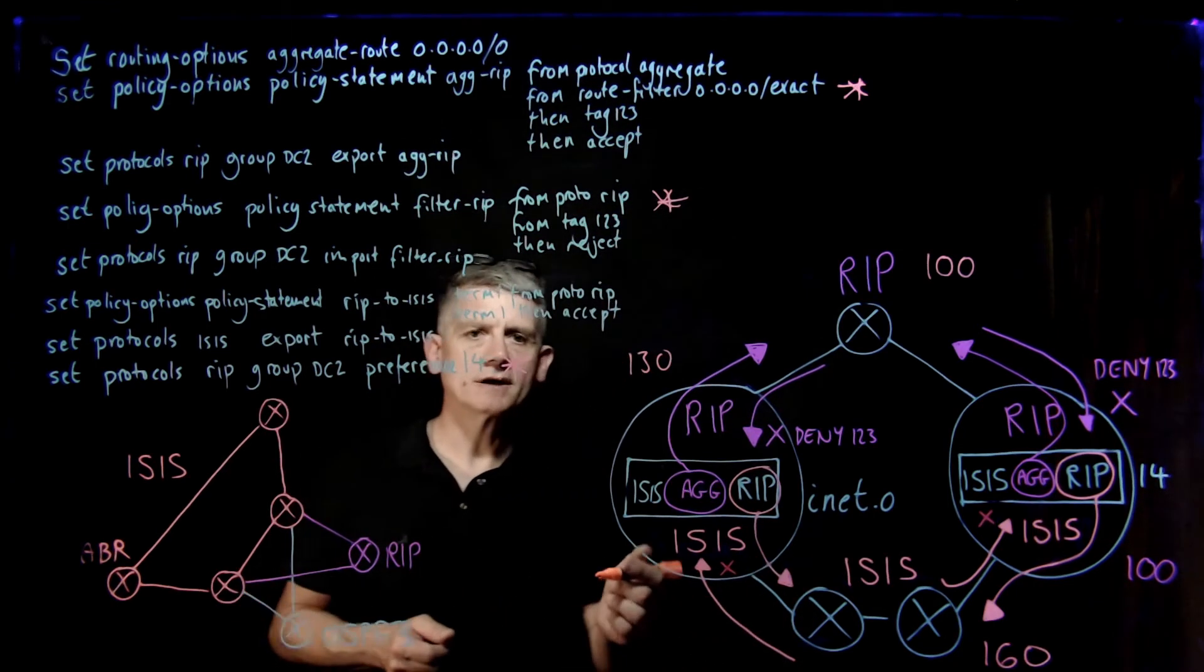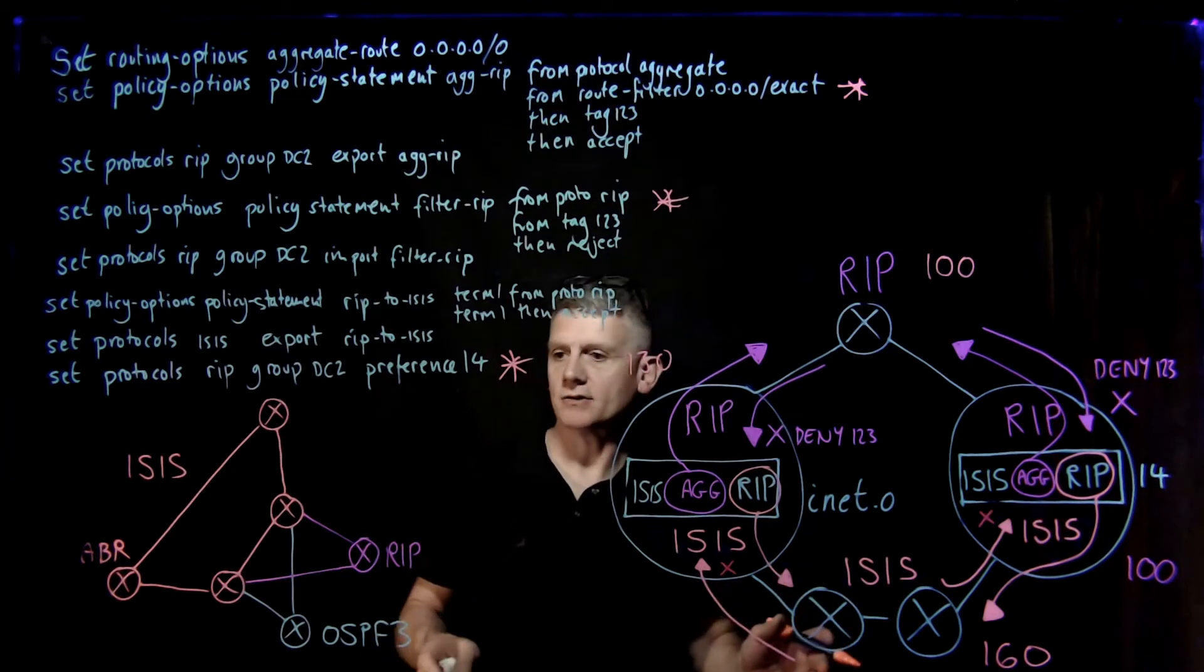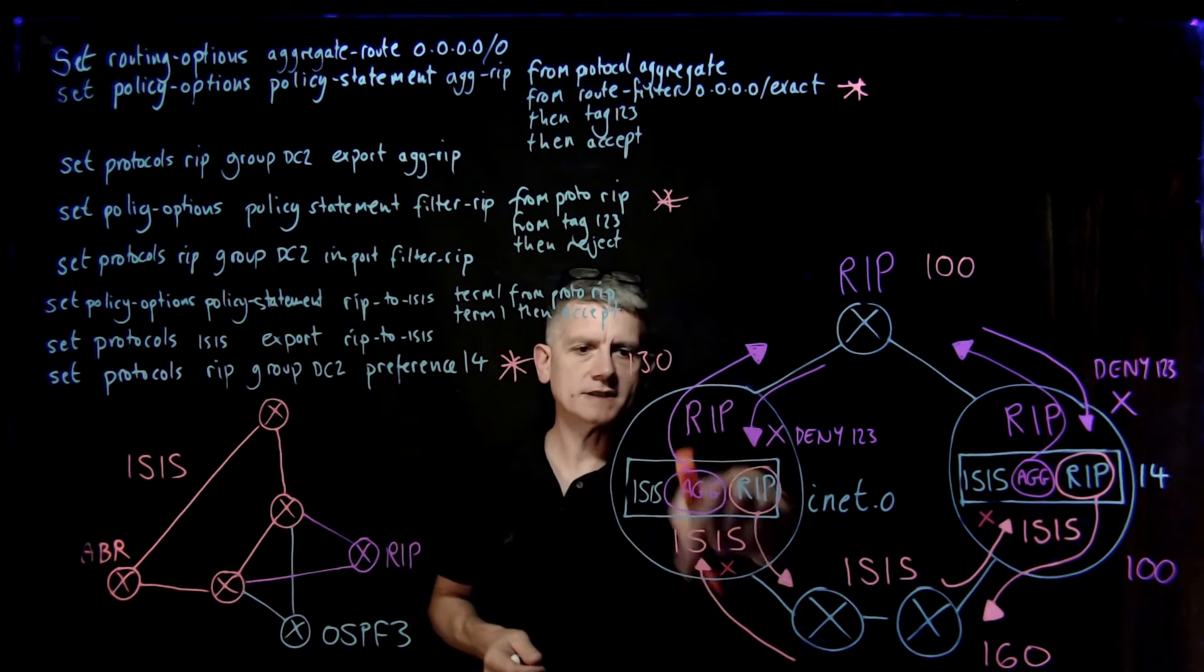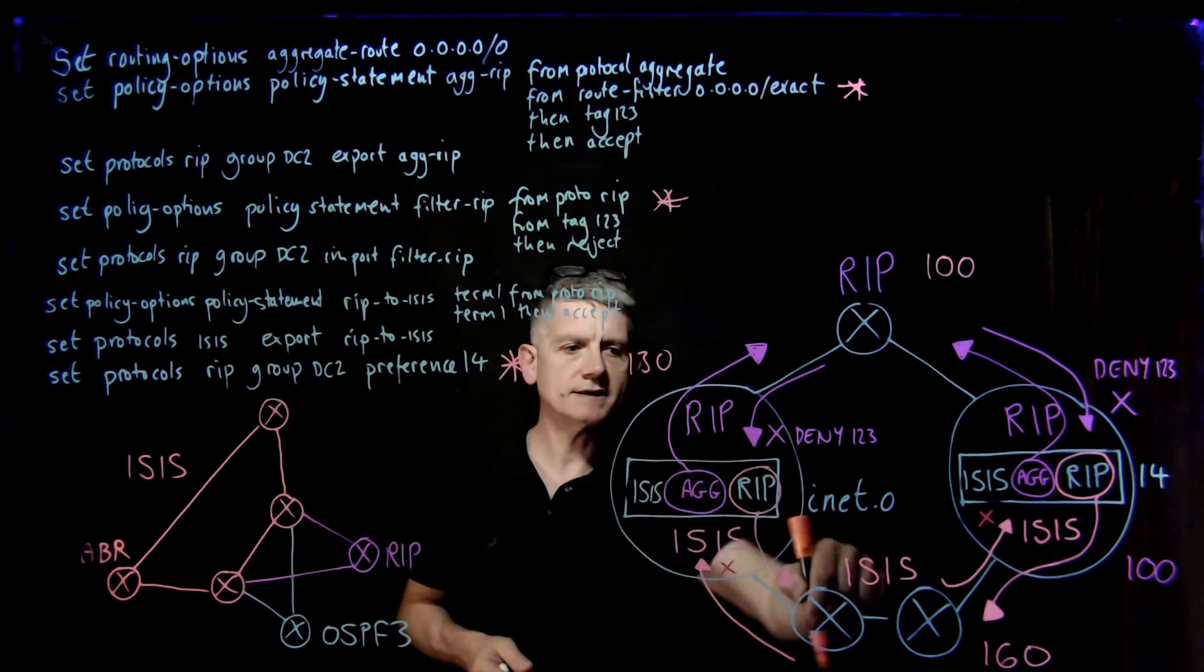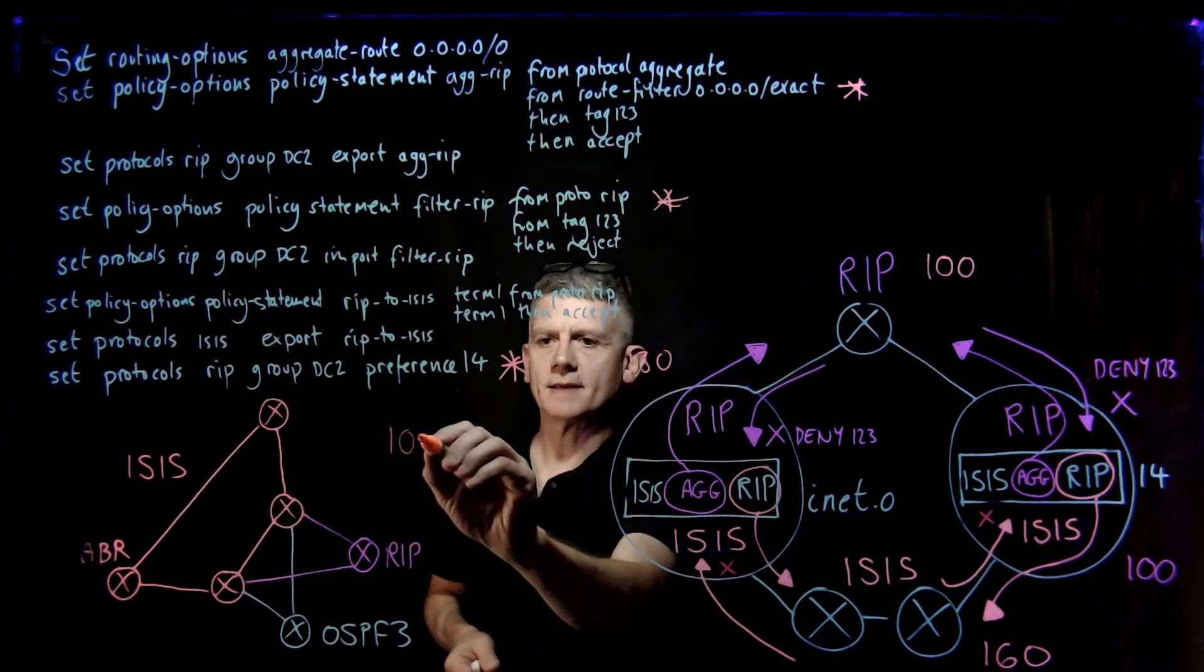Let's see how the numbers actually work. Well, we have to remember that we are running wide area networks only on this little design here. And so what that means is that the route that's coming out of the RIP into the ISIS, in the RIP, it's going to start with a preference of 100.